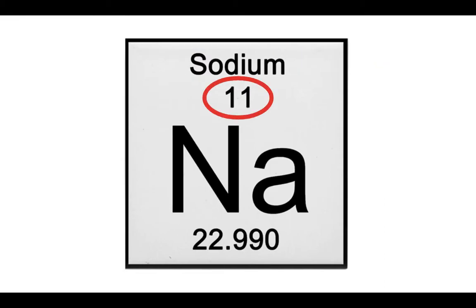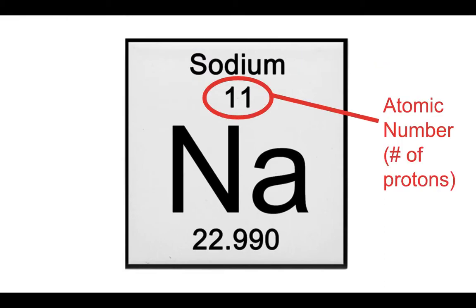Below the element name is something called the atomic number. There are 118 elements on the periodic table, and they each correspond to one number. The atomic number is also the number of protons in the element.